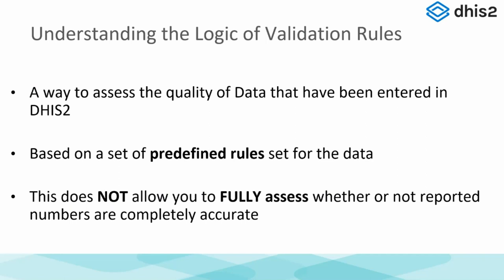An overview of validation rules: essentially, validation rules are predefined logic between different data elements in a reporting form. A very common example is: the number of treated should not be greater than the number tested. If it is, there's probably a data quality issue. They don't fully assess whether a report is accurate or complete — they are basically a predefined rule defining the relationship between two different data items or data elements.